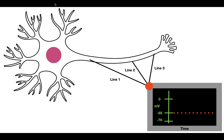I'd like to start off first with an experiment explaining the difference between a sub-threshold potential and an action potential. So let's first look at what a sub-threshold potential is. I have a hypothetical experiment in which we have a neuron. Attached to this neuron are three different lines, all attached to different locations on the axon.